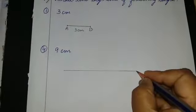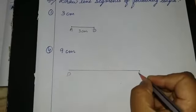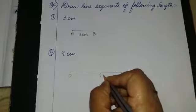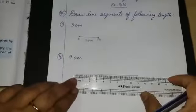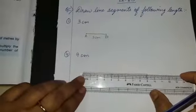Point out the dots, then give the points names — like D and E. It is 9 cm. If you want to check, put the scale and check. It is 9 cm.